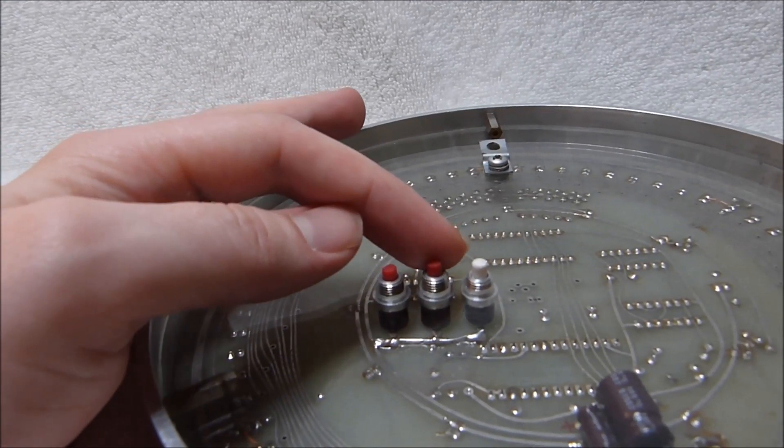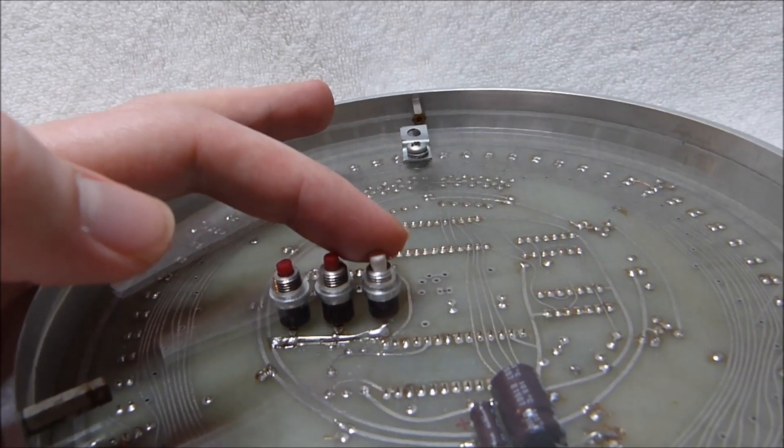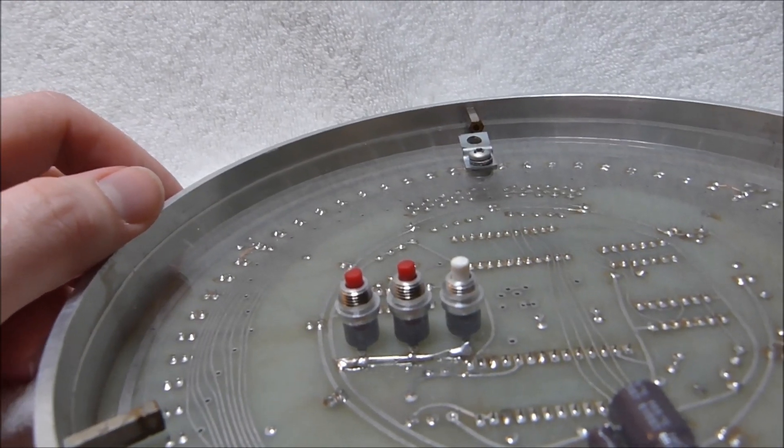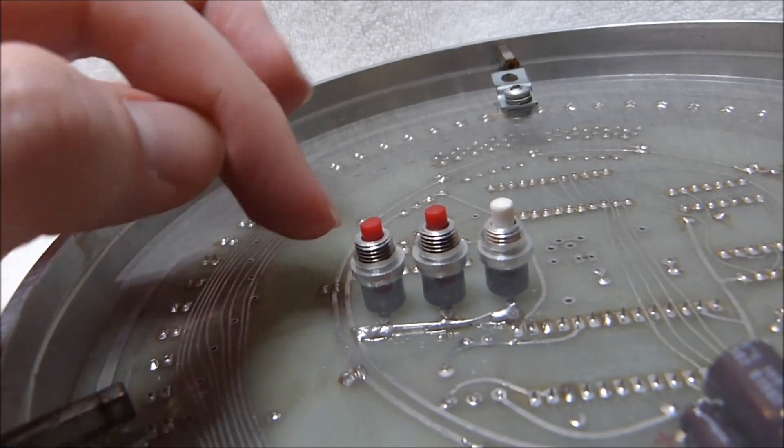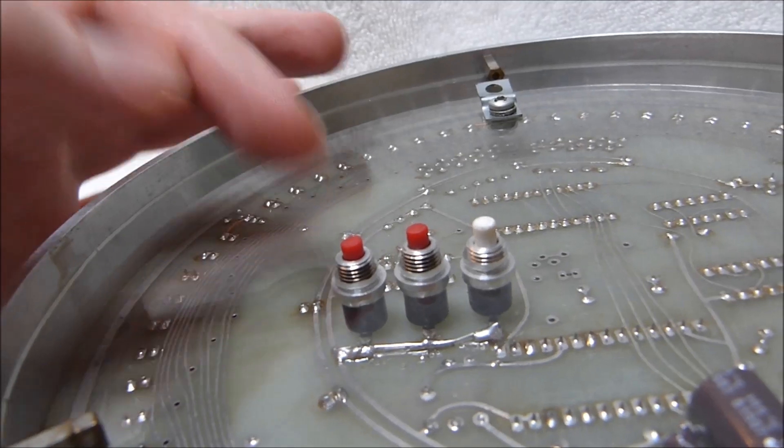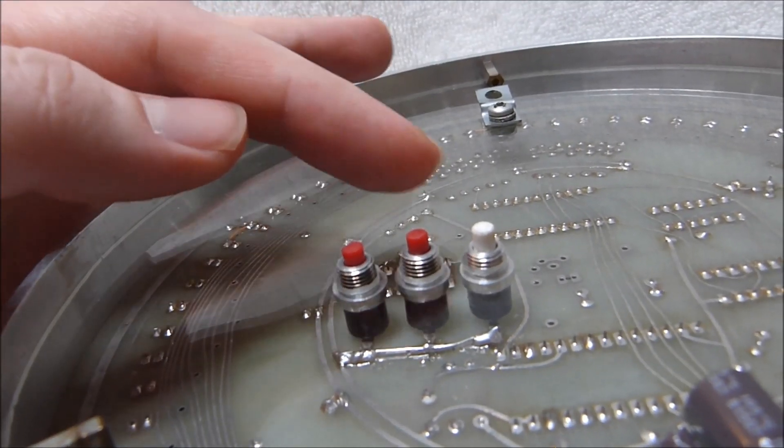Two of them are vintage Archer push buttons and this one's a more modern Radio Shack push button. The three original switches also had the tops cut off but they were cut flush with the body of the switch, which meant you had to use a pen or some other object to push in the switches.